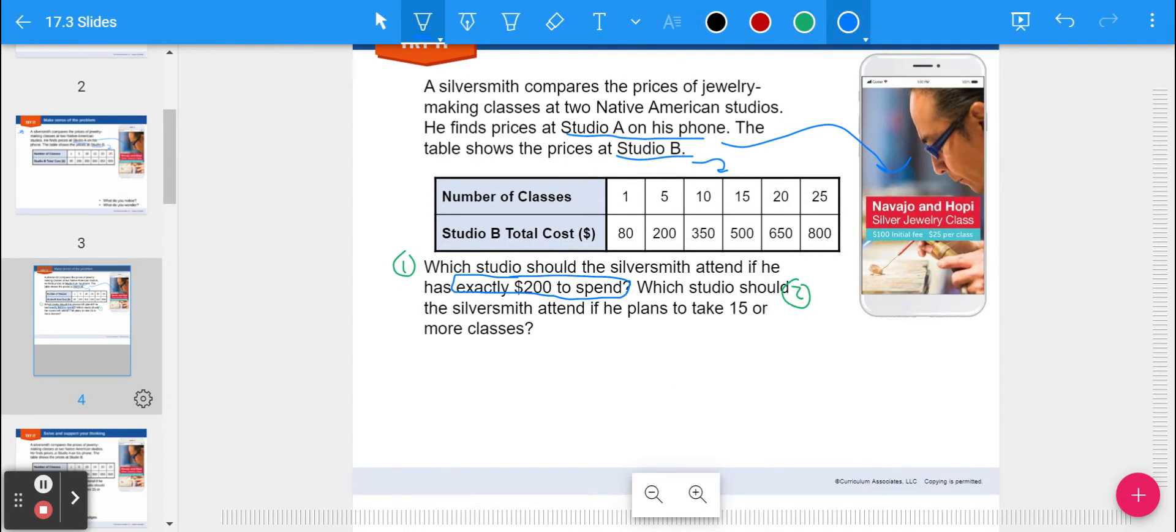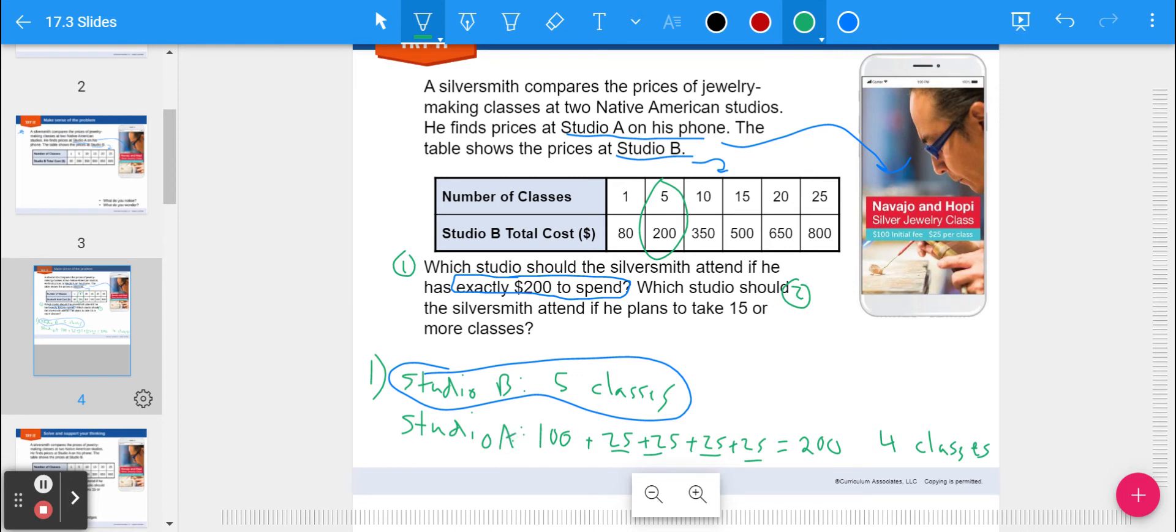So the way I would look at this is if I would answer number one. Studio B, it's five classes for $200. And Studio A, we don't know yet, but if we take the $100 plus $25, we could add that four times. 25 times 4 would get you another $100. That equals $200. That would be four classes. So if I was choosing between Studio A and Studio B, I would go with Studio B because I get five classes out of it as shown in the table. Whereas in Studio A, all we would get is four classes for that $200.